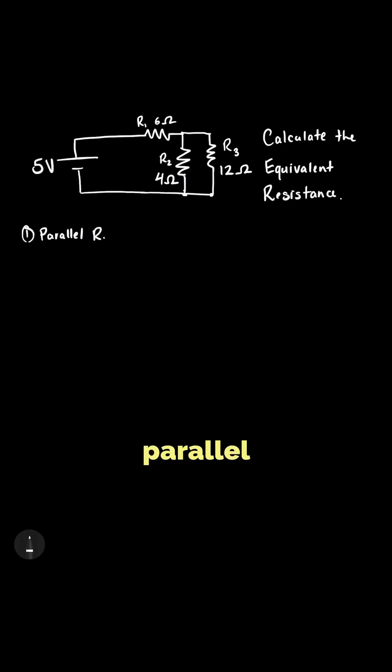First, solve for the parallel resistors. We use 1 over R equals 1 over 4 plus 1 over 12. Finding a common denominator, we get 3 over 12 plus 1 over 12, which equals 4 over 12. Flipping that, the parallel resistance is 3 ohms.